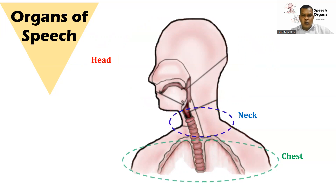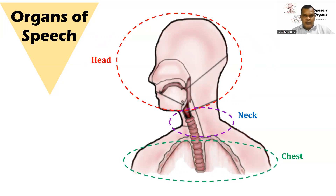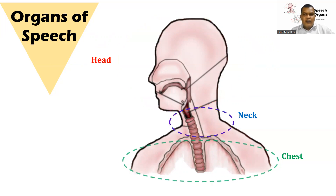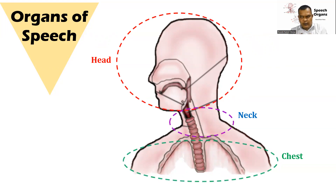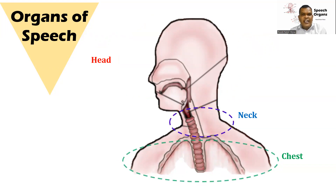The chest is also called the subglottal system in the system of sound production. The subglottal system includes the lungs and, of course, the associated muscles needed for inhalation and exhalation, and the trachea or windpipe. The subglottal system — essentially our lungs — provides the air support for speech, in order that we can produce sounds.